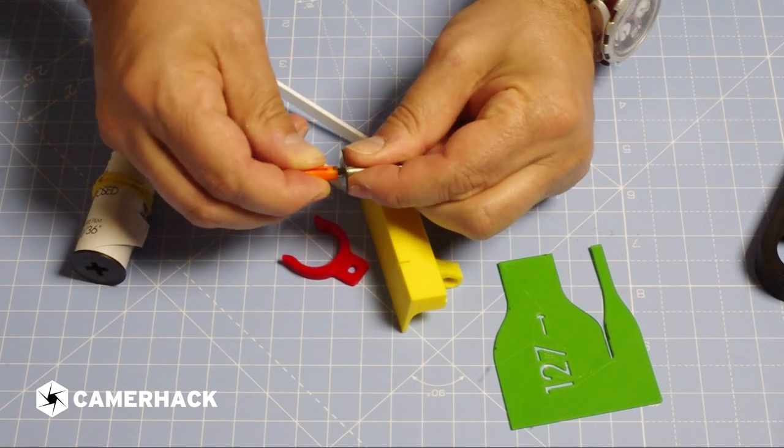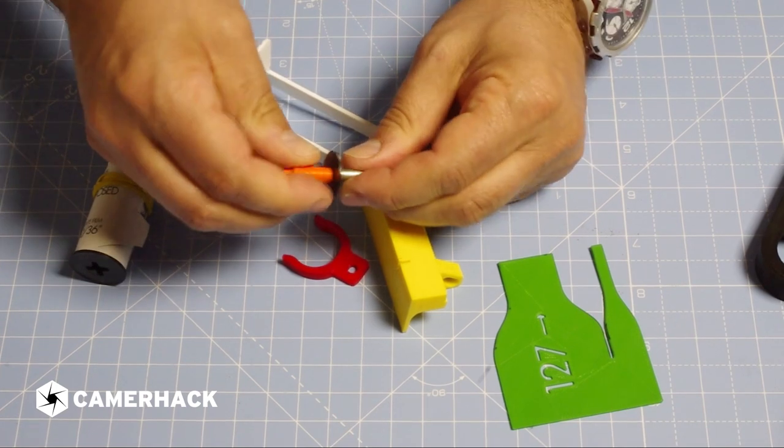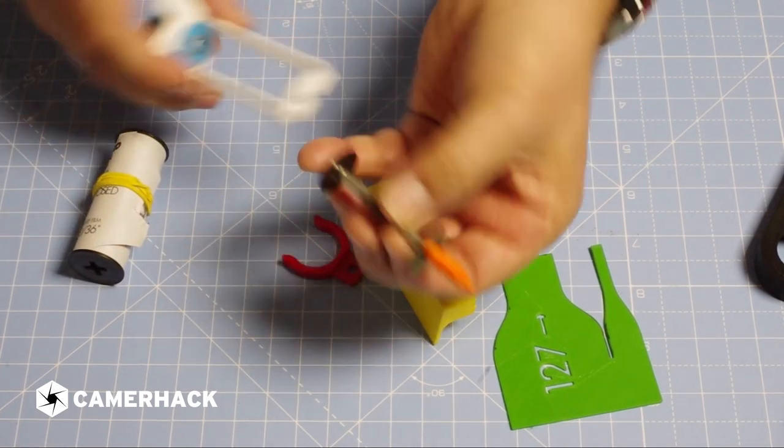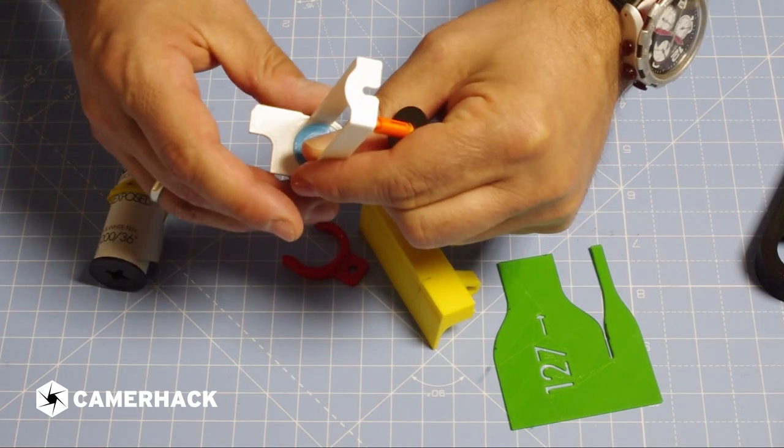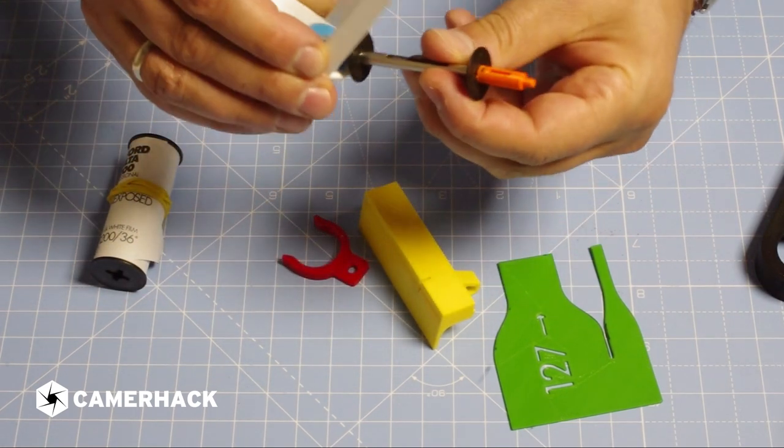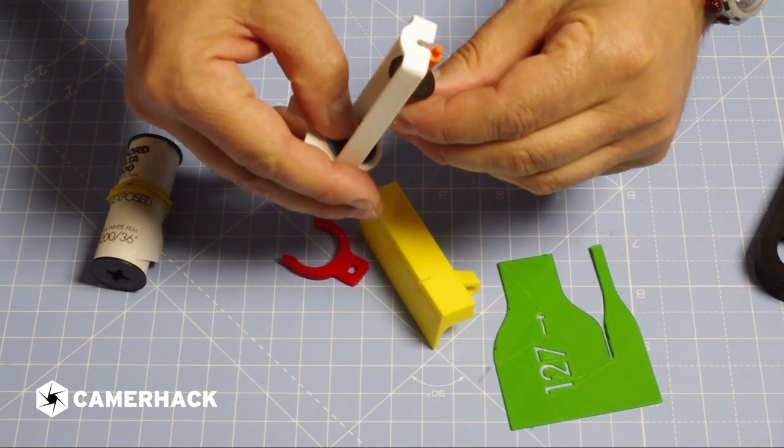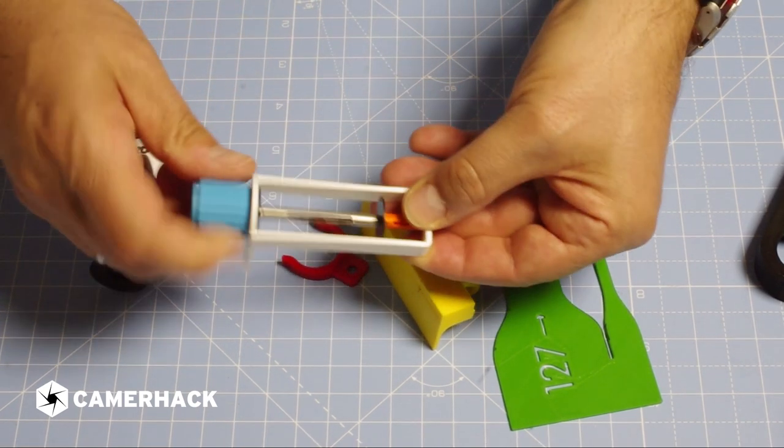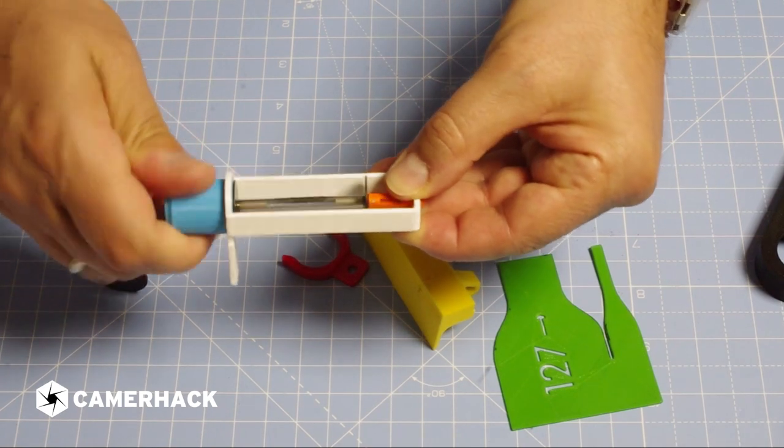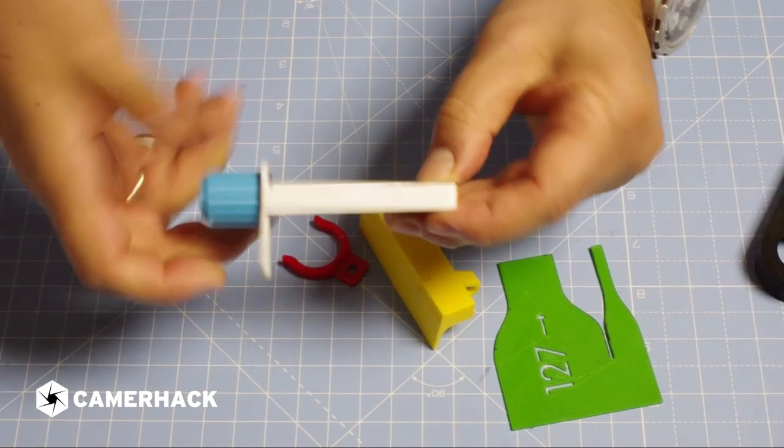You just have to connect the two spools like this. When the two spools are connected you just put them inside the white cage. So this is where the film will be rolled.